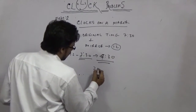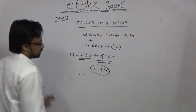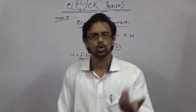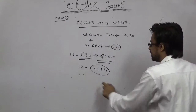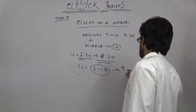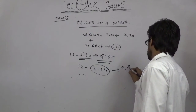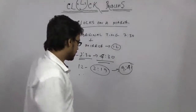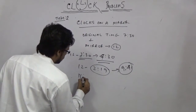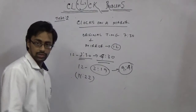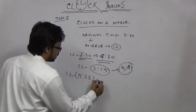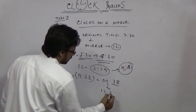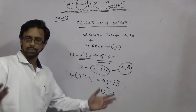For example, if you are given 7:30, subtract it from 12: you get 4:30. For another example, if given 2:9 (2:09), apply 12 minus 2:09 and you get 9:41. If you have the time 11:22, then 12 minus 11:22 gives you 0:38. So Type 2 is done.